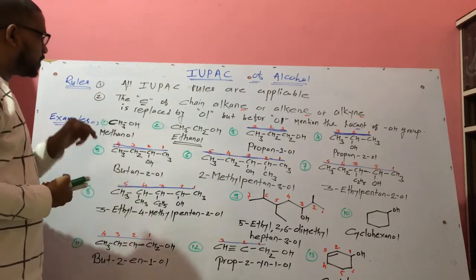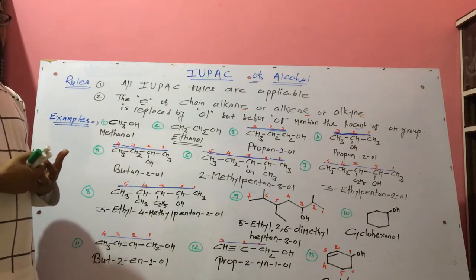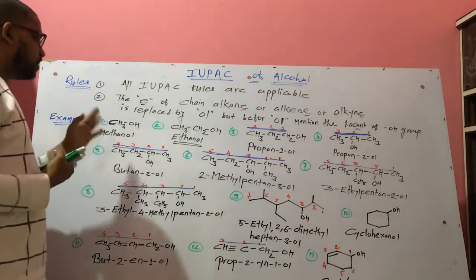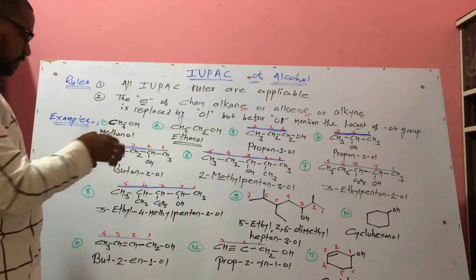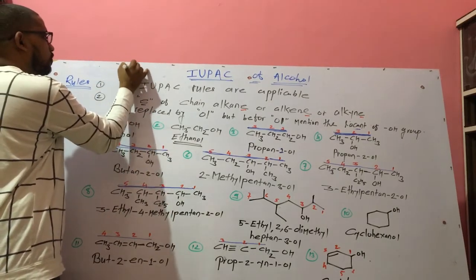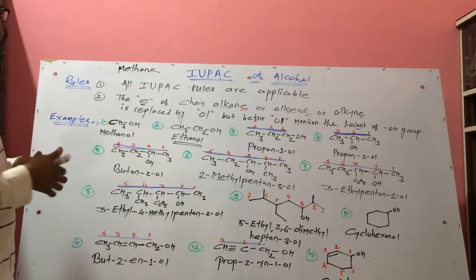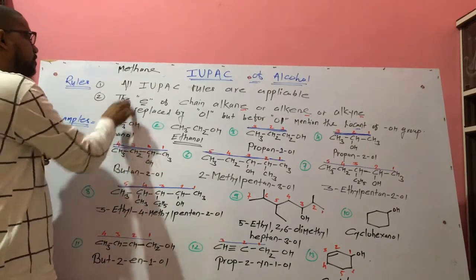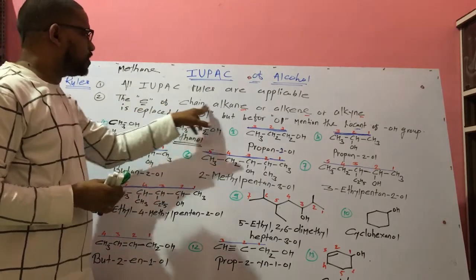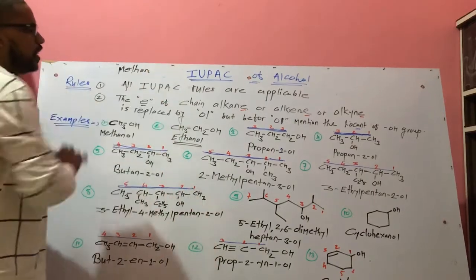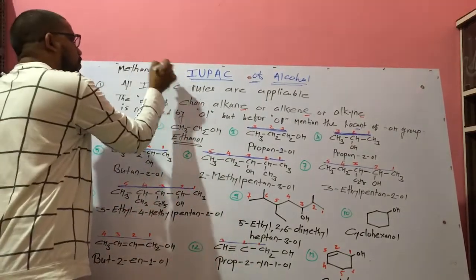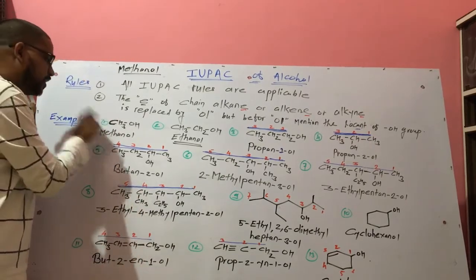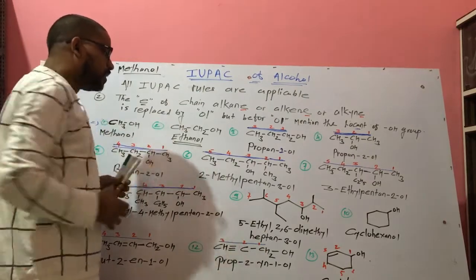One carbon atom with carbon-carbon single bond is methane — the first member of the alkane series containing one carbon atom. To name the corresponding alcohol, the 'e' of the chain alkane is replaced by 'ol'. So methane becomes methanol. Methanol is the first member of the alcohol series, which contains one carbon atom.